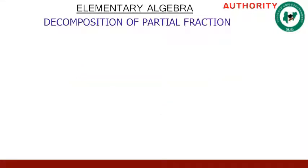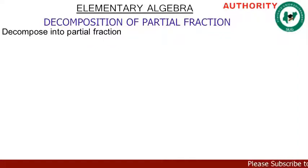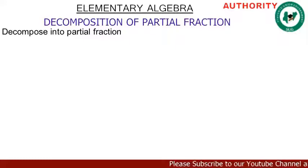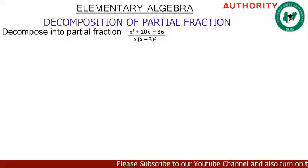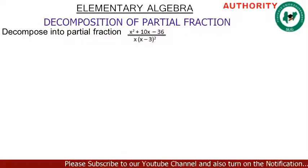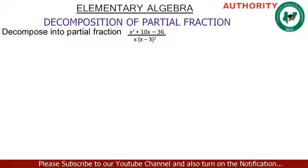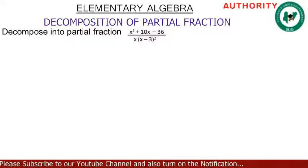All right, you are welcome again. We are still treating the composition of partial fractions. So let's take this question: decompose into partial fractions x squared plus 10x minus 36, all over x times the bracket (x minus 3) squared. Okay, so let's go.